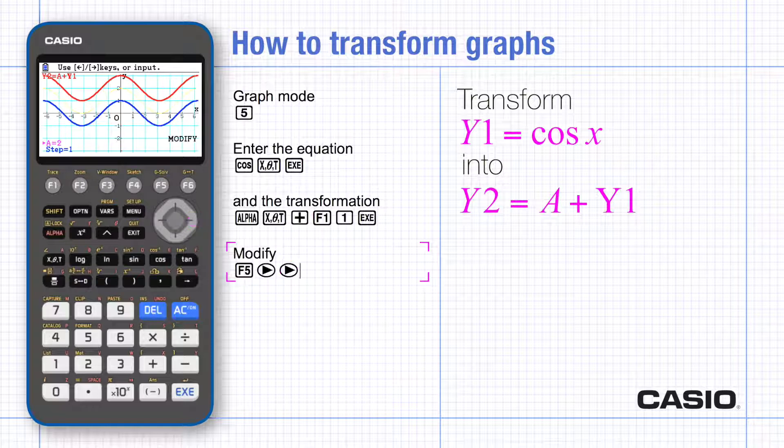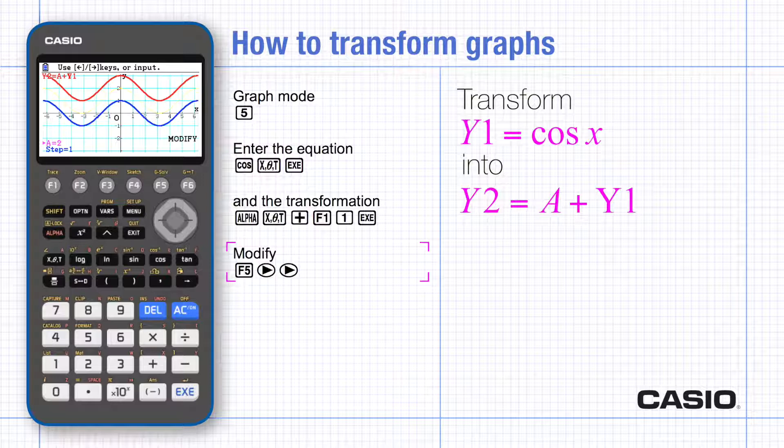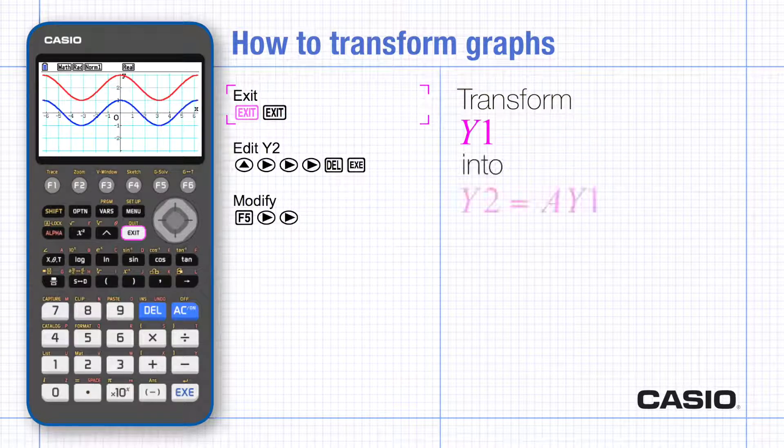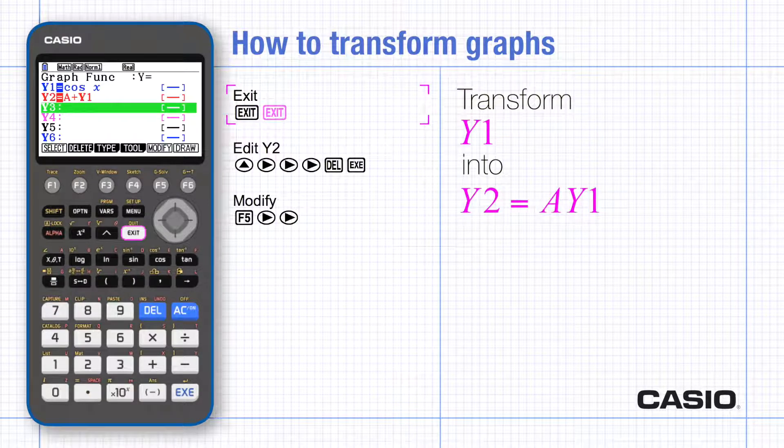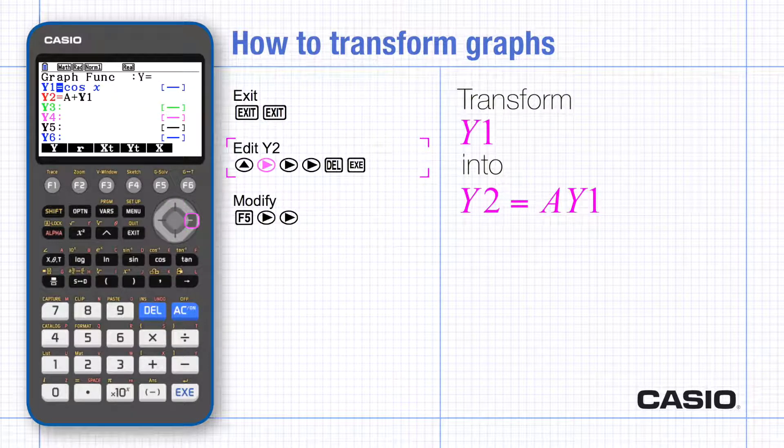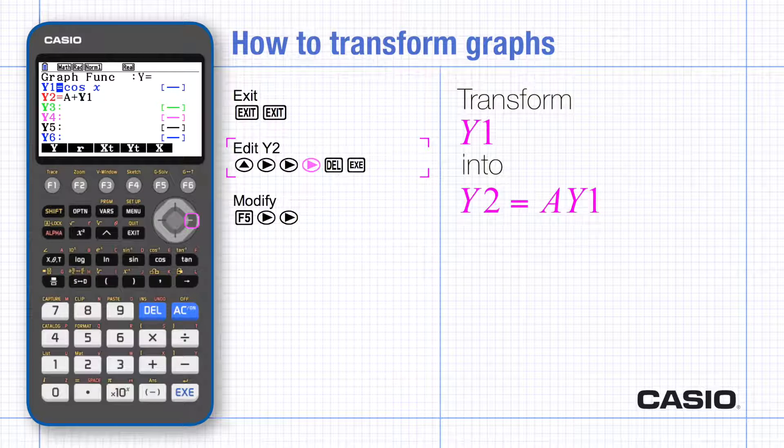If you were going to go back and change f1 you could see how the transformation of that new graph works without altering y2 at all. For our next transformation exit to graph mode and then exit graph mode to get back to your list of functions. Just edit y2 by highlighting it and scrolling sideways. Go past the plus and delete it and then a now becomes a multiplier.